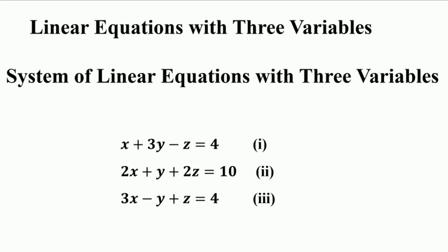Similarly, a linear equation with three variables shows a relationship between three unknown values. A set of values for three unknowns satisfies the equality statement. For example, x plus 3y minus z is equal to 4, where x, y, and z are the three unknown variables. This is a linear equation because the power of x, y, and z is equal to 1.